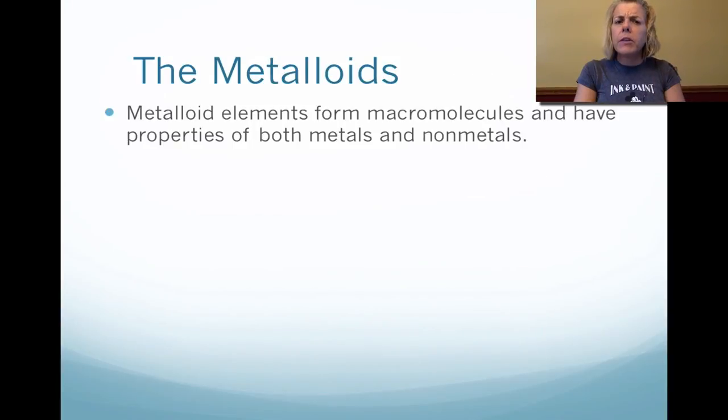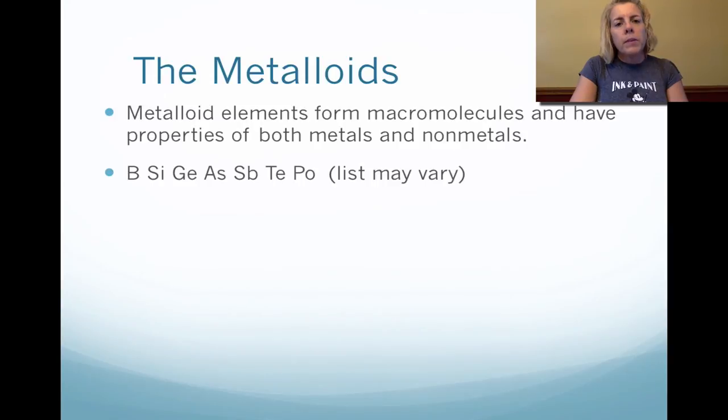Metalloids are a little combination of both metals and non-metals, and they tend to form big molecules. That's why we call them macromolecules. Some examples of metalloids would be boron, silicon, and germanium.